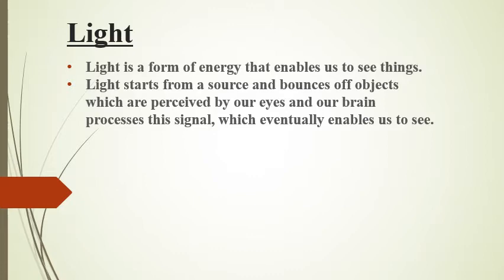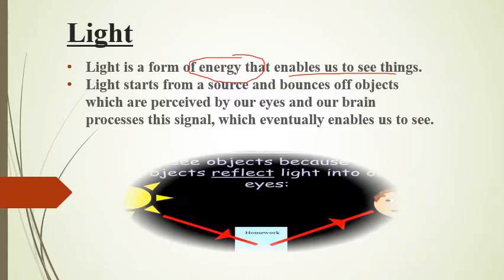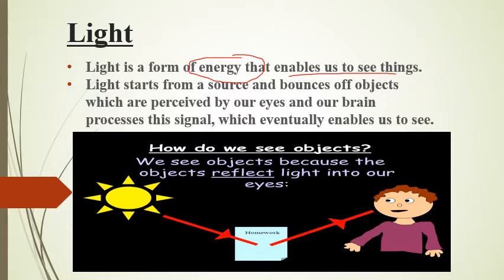The first topic is: what is light and why are you able to see things? Light is a form of energy. This is called the reflection of light. Here is our sun — a light source. This light we call incident rays. Suppose this is any object — light reflects upon it, which then goes to our eyes, and the brain processes the signals, which is how we can see.